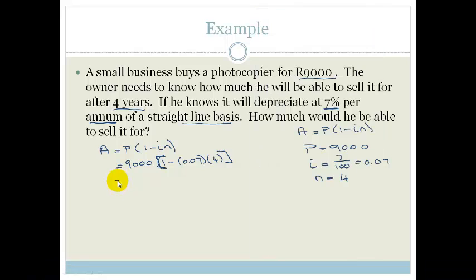Times by 9,000, so he's going to get 6,480 Rand for his photocopier, which isn't too bad. Not too bad after 4 years.